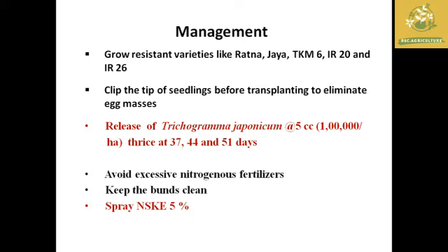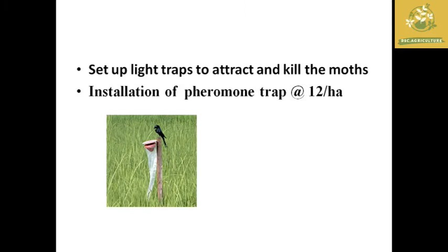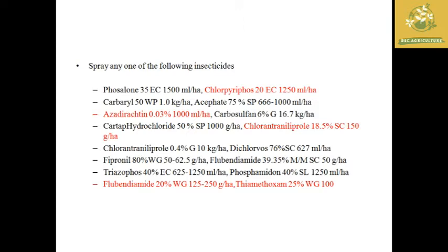Management practices for stem borers include: growing resistant varieties; release of Trichogramma japonicum at 5 cc, thrice at 37, 44, and 51 days after transplanting; spraying neem seed kernel extract at 5% in the field. For monitoring, set up light traps to attract and kill moths, and install pheromone traps at 12 per hectare. Chemical insecticides are also importantly used for destruction of stem borers.